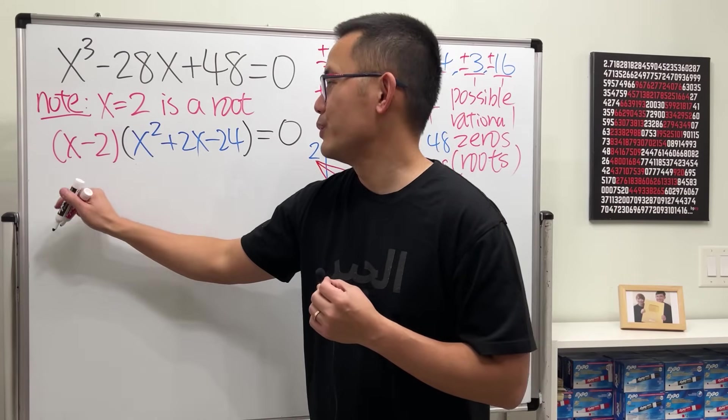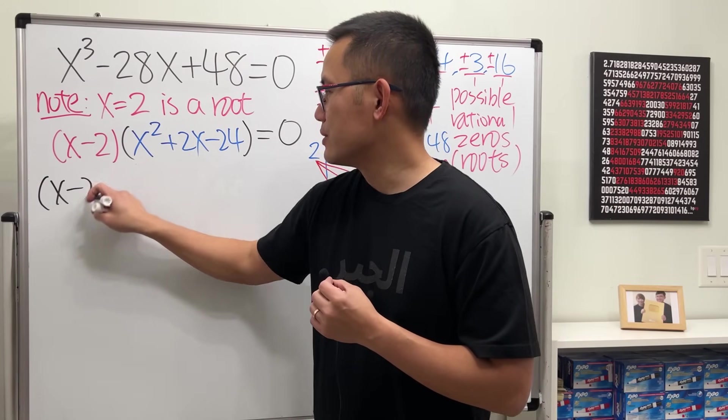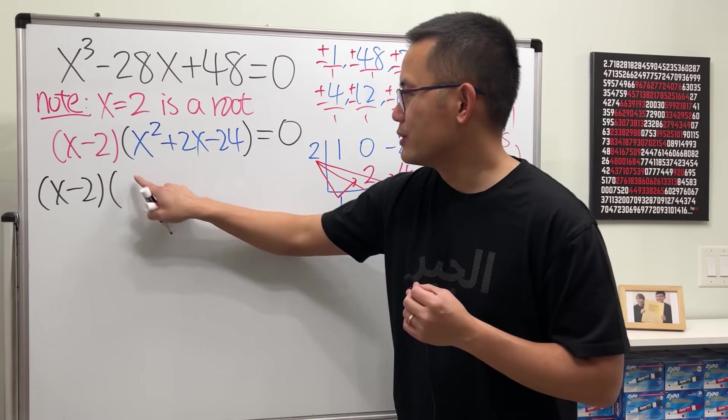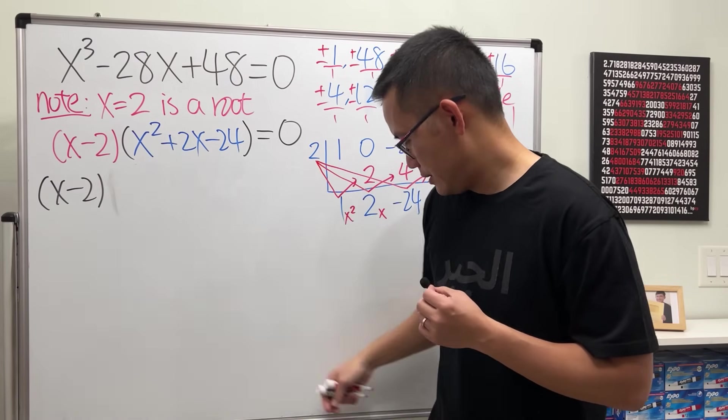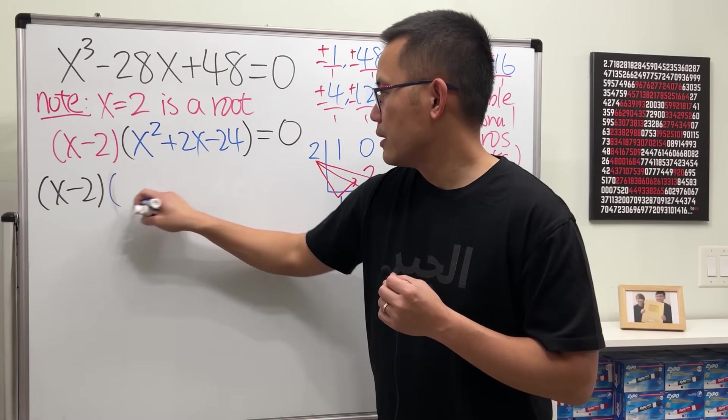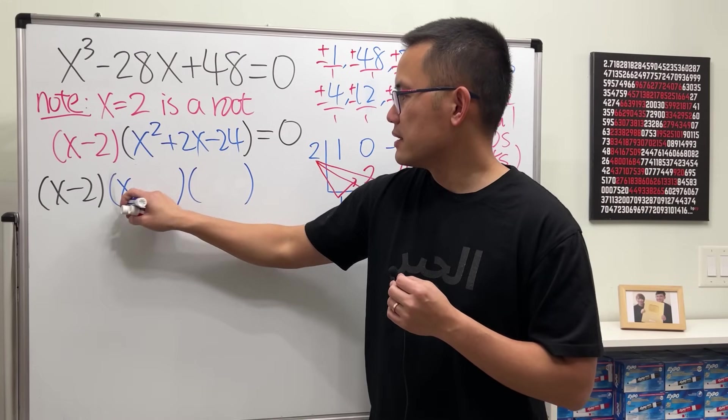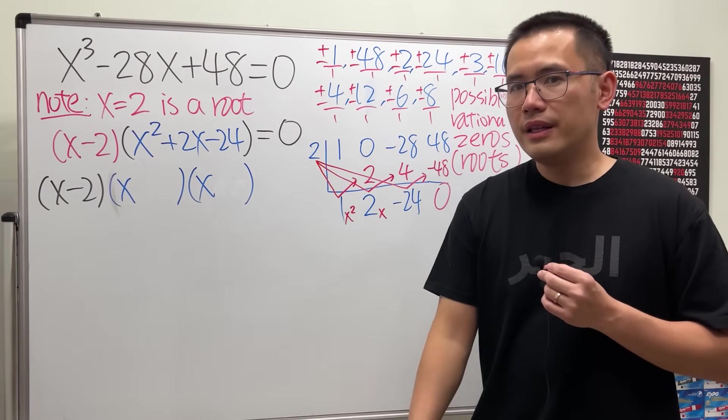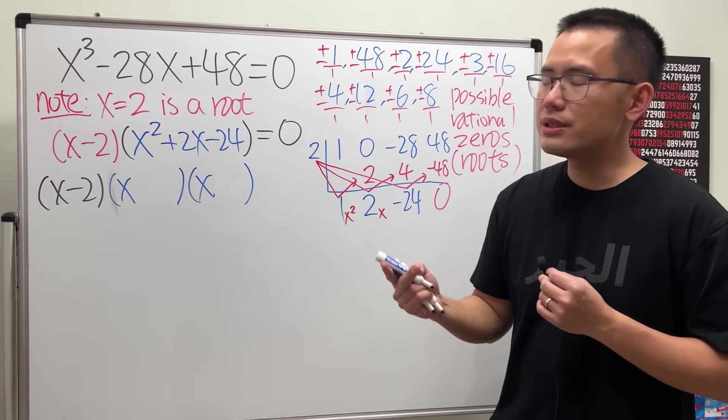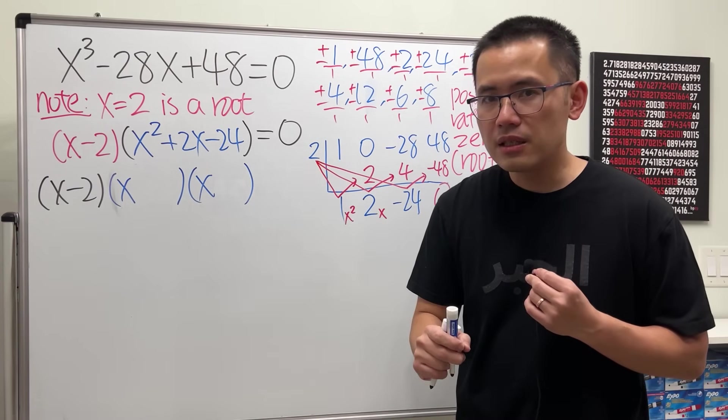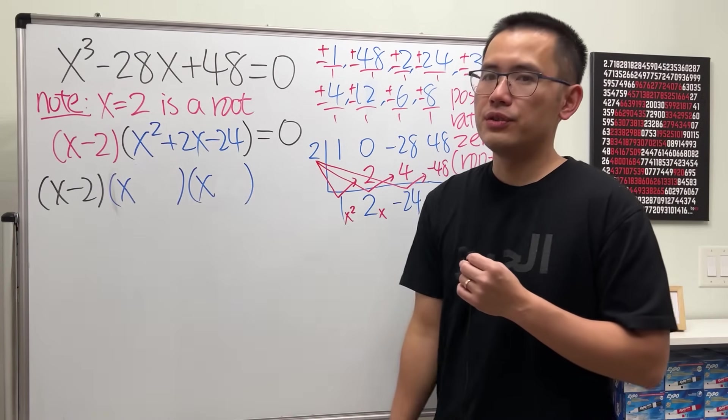Now to factor a quadratic, of course we can just do it regularly. So I will do it regularly. This is x minus 2, because it's just x squared, so I'm just going to open two sets of the parentheses here. X times x gives us the x squared. Then we have to think about two numbers: they multiply to negative 24, together they add up to positive 2. What are the choices?